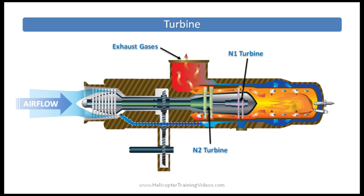Some helicopters have what's called a direct drive or fixed turbine, where both turbines are on the same shaft. But most helicopters have something called a free turbine, where the N1 and the N2 are on separate shafts. The exhaust then escapes out the exhaust outlet. Temperatures are measured at different places depending on the manufacturer, but a common measurement is the turbine outlet temperature, which is monitored to make sure the engine is within limits.